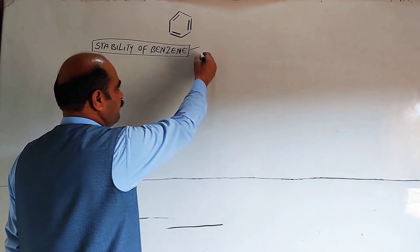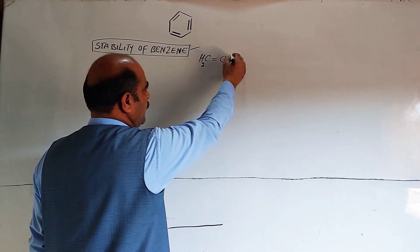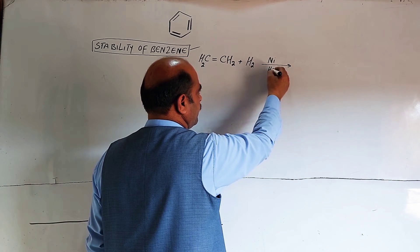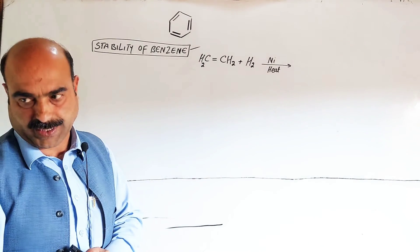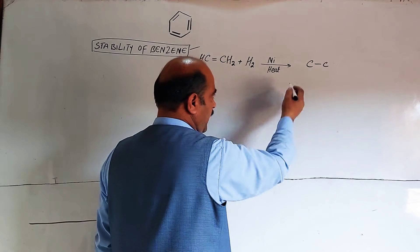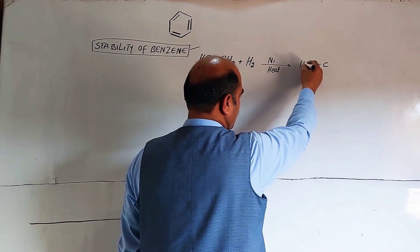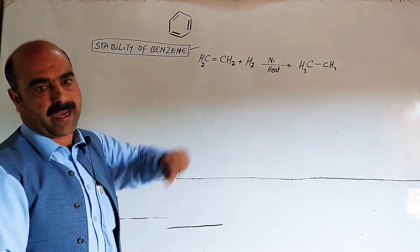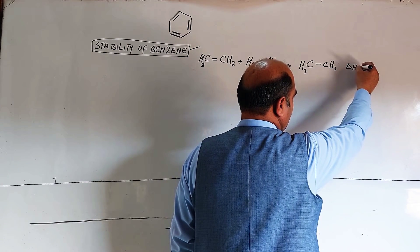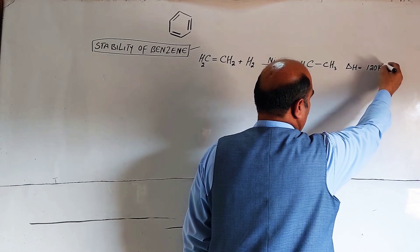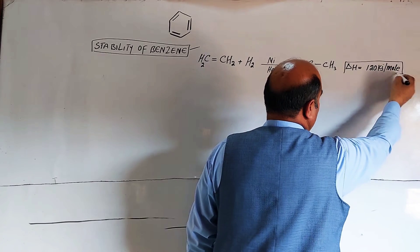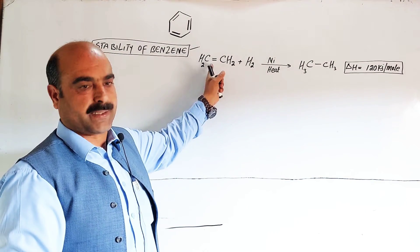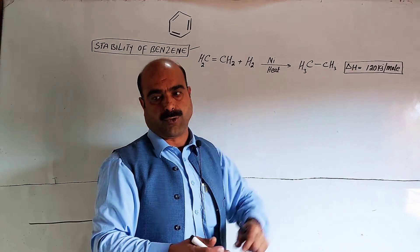Let us start with the definition. Take an alkene: CH₂=CH₂ (ethene), which has one double bond. Plus hydrogen in the presence of nickel as a catalyst, and heat at 150 to 250 degrees — the pi bond breaks. The unsaturated compound becomes saturated. During this catalytic hydrogenation process, the heat released — delta H — is approximately negative 120 kilojoules per mole. This means one pi bond releases 120 kJ/mol upon hydrogenation.